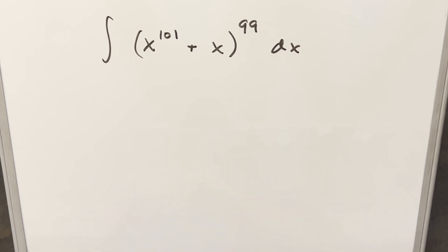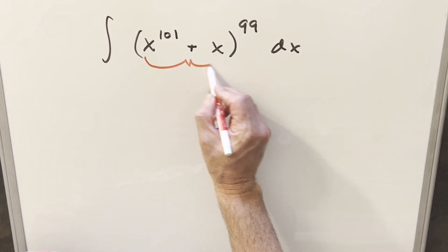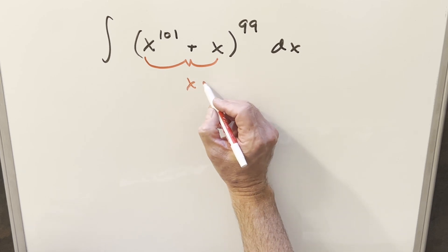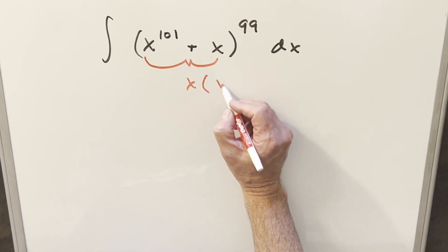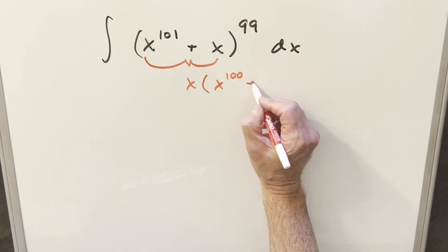So now to get started with this I'm going to want to do some kind of u substitution and you know the troubling thing is that we've got x in both terms. So I think I want to factor this. If I factor an x out this is going to become x to the 100 plus 1.